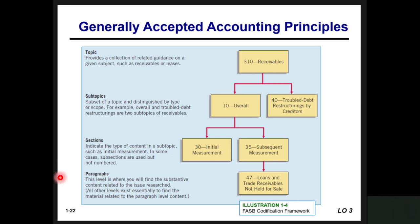Topics provide a collection of related guidance on given subjects such as receivables or leases. Subtopics are subsets of topics distinguished by type or scope — for example, overall or troubled debt restructuring are two subtopics of receivables. Sections indicate the type of content in a subtopic, such as initial measurement. Paragraphs are where you find the substantive content related to the issues being researched; all other levels exist essentially to help navigate down to the paragraph level content. This FASB codification framework helps you navigate down to the paragraph level of what you're looking for.